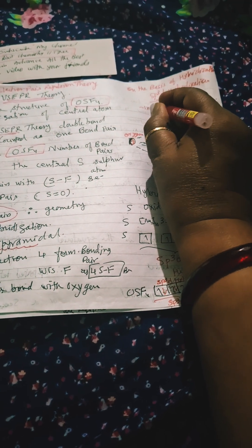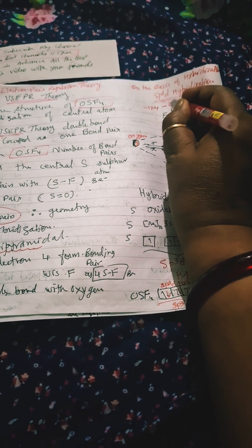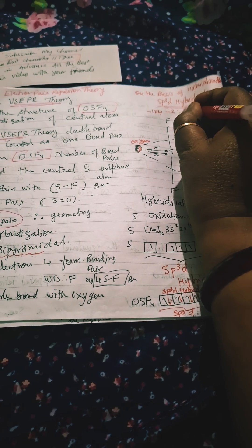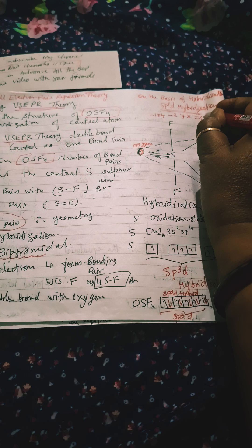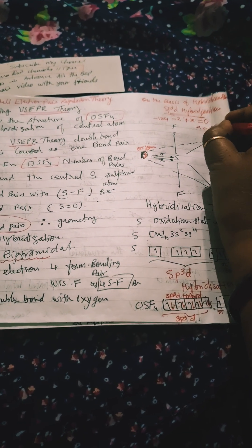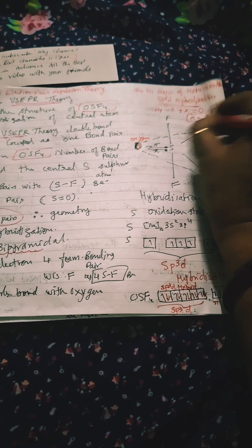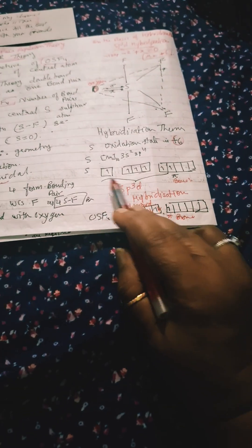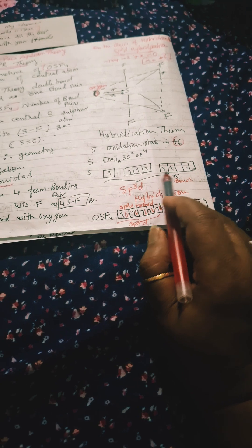There is minus one times four for fluorine and minus two for oxygen, and plus x for sulfur. Since it is a neutral molecule, it equals zero, so x equals plus six. This is the oxidation state of sulfur, meaning we need six unpaired electrons.